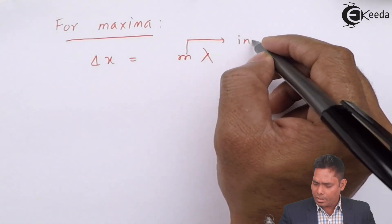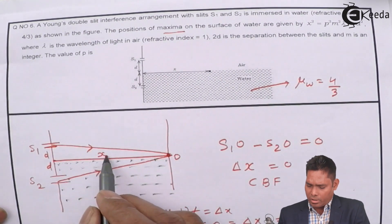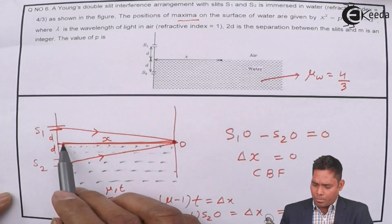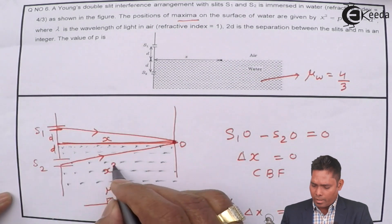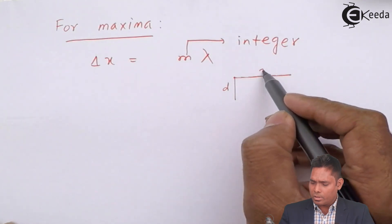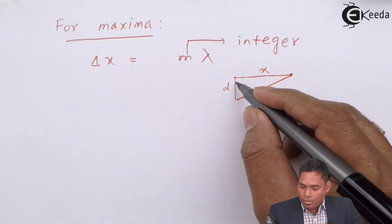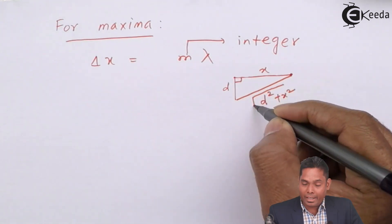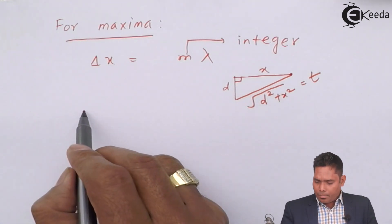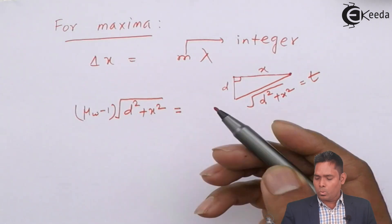Now, at a point x on the surface of water, the distance from S2 to that point is √(d² + x²) by Pythagoras' theorem, since the horizontal distance is x and the vertical distance is d. This is the thickness T through which the ray travels in water.